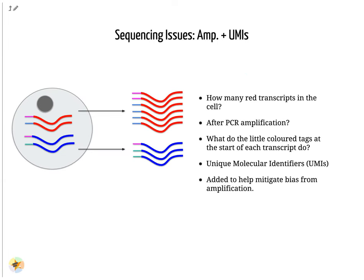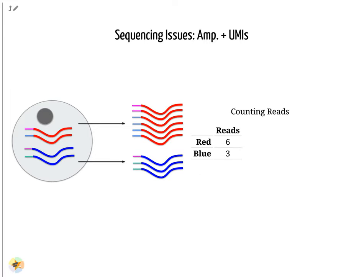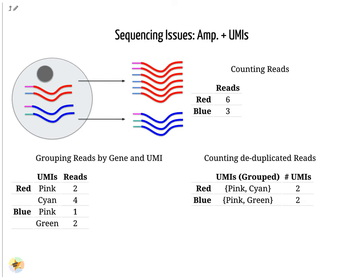To guard against this type of amplification bias, we can add a random element to the barcoding. These random barcodes known as UMIs uniquely tag transcripts such that any two transcripts of the same gene are likely to have different random barcodes. Consider the example: we have two red transcripts and two blue transcripts inside the cell, which after amplification equate to six red transcripts and three blue transcripts. If we were to compare the differential gene expression between the red and blue transcripts just by looking at the amplified reads, we would come to the false conclusion that the red transcripts are expressed twice more than the blue. However, if we group the reads by their UMIs and then count only the number of unique UMIs per transcript, de-duplicating reads which share the same transcript and UMI, we arrive at two red reads and two blue reads, which better represents the true number of transcripts.